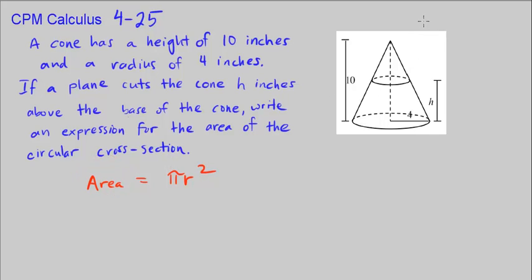Before we jump into knowing that the volume of a cone is one-third pi r squared h, we don't need this for this problem. All we need to look at is we have a triangle here and a triangle here. And if you remember from geometry, these are similar triangles.